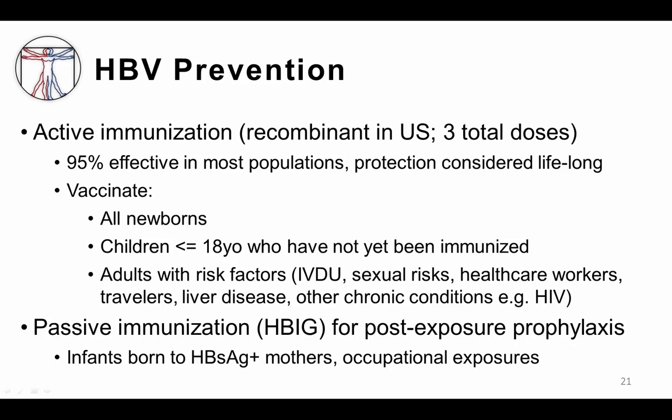Another strategy for preventing hepatitis B disease is testing to identify pregnant women who are hepatitis B surface antigen positive, and then providing their infants with immunoprophylaxis through both immunization and passive antibody administration, which effectively prevents hepatitis B transmission during the perinatal period. This strategy can also be used for adults who have possibly been exposed to a hepatitis B virus carrier through occupational hazards such as a needle stick injury.